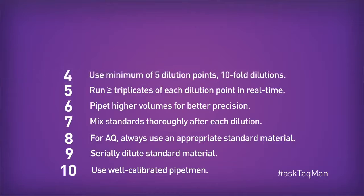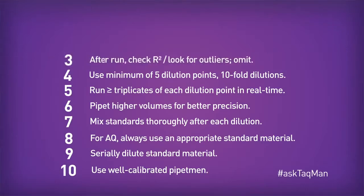Number 4: use a minimum of 5 dilution points, each of which has at least a ten-fold dilution. Number 3: after the run, check your R-squared, look for outliers, and omit them.